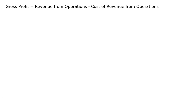Revenue from operations or net sales equals Rs. 8 lakhs. Gross profit equals revenue from operations minus cost of revenue from operations, that is Rs. 8 lakhs minus Rs. 6,40,000, which equals Rs. 1,60,000. Hence, gross profit is Rs. 1,60,000.